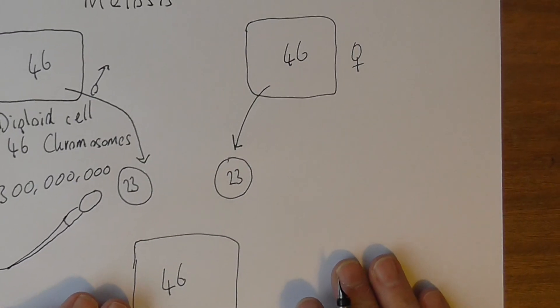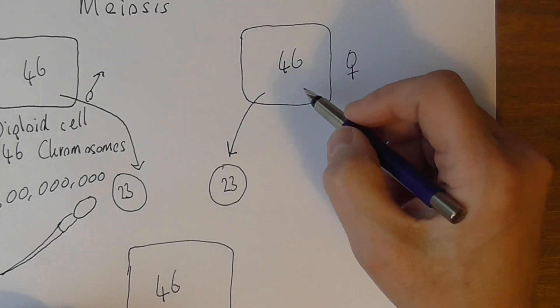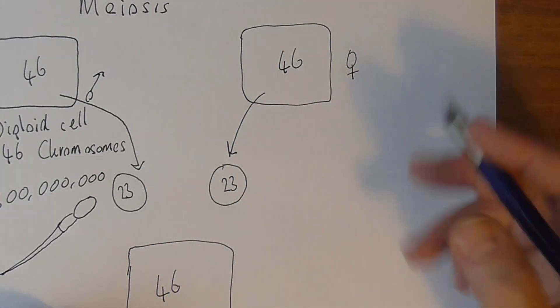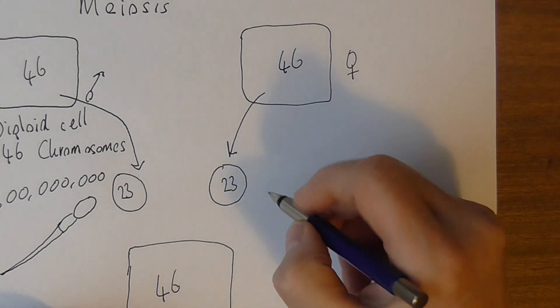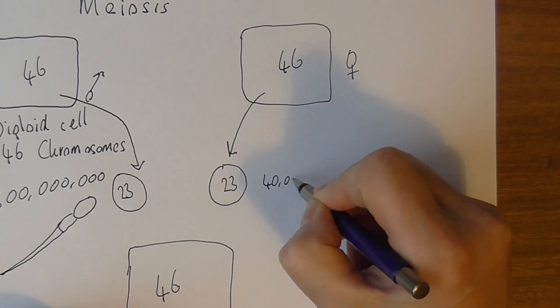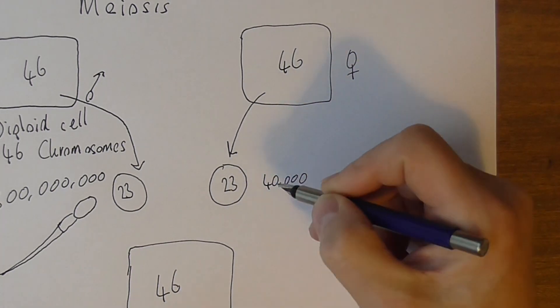Now when a girl's a fetus, she's probably got a lot of these, maybe a million or so, but by the time she's mature and she's ready to start the menstrual cycles, she's probably got about 40,000 left. Not all of them mature, of course.